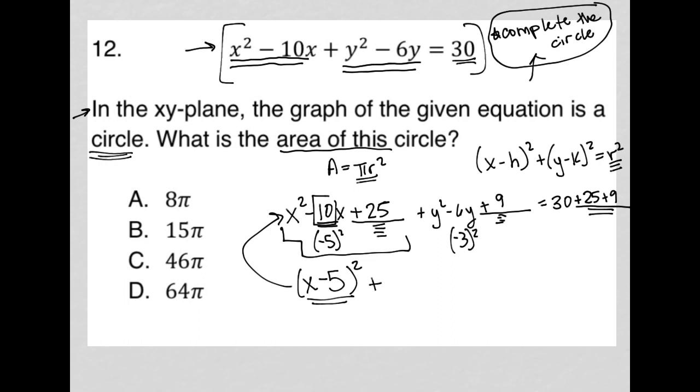We do the same thing with y, so we'd have (y minus 3) and then squared. And again, you can test it out. It will equal y squared minus 6y plus 9. And now on this side, we have 30 plus 25, which is 55, plus 9, which is 64. And bingo, this is what we wanted.